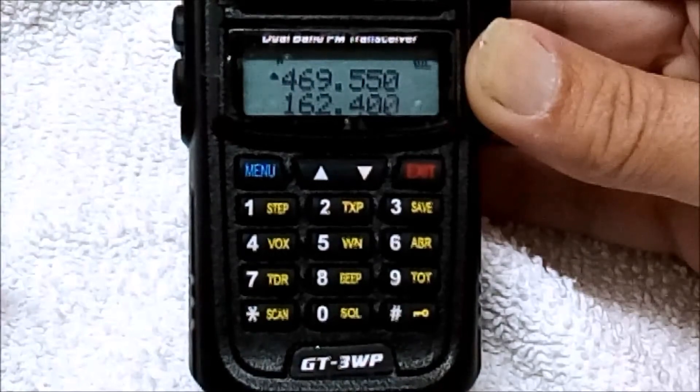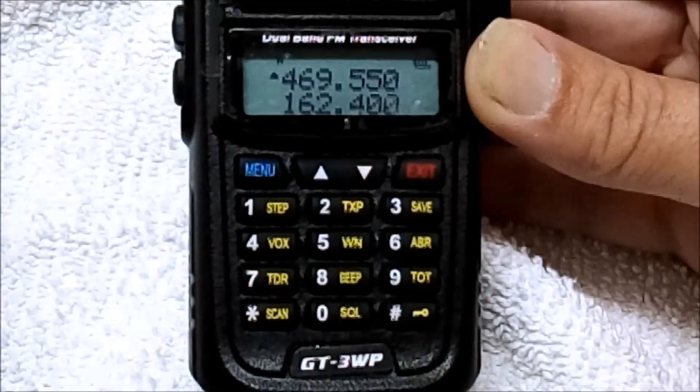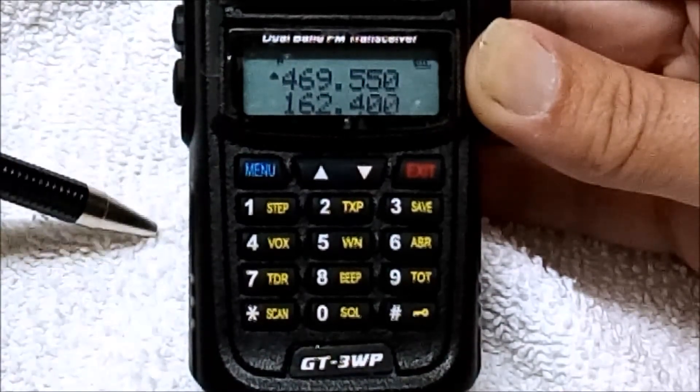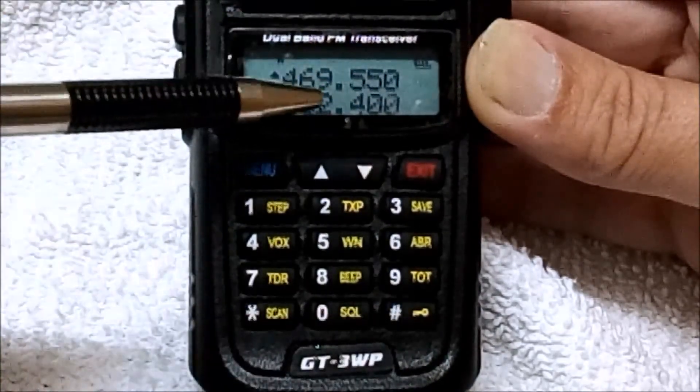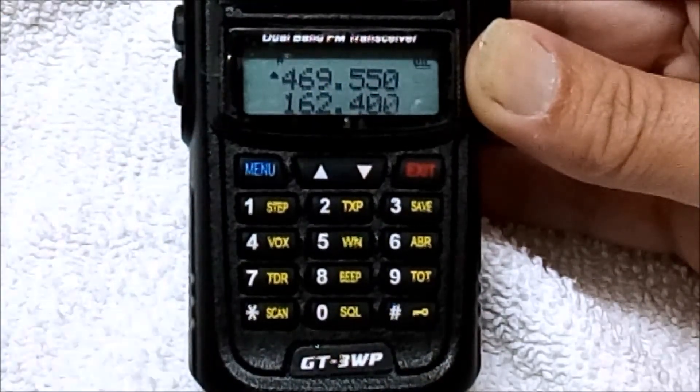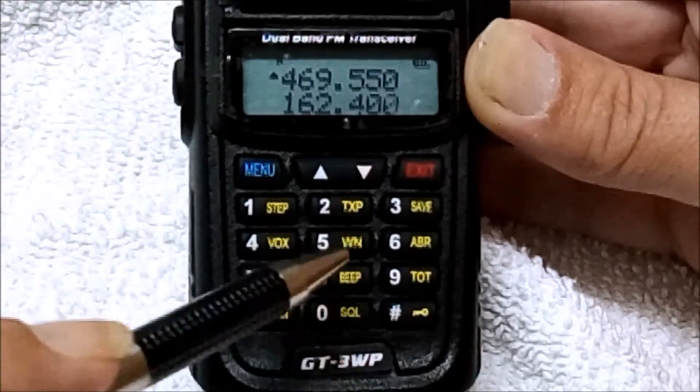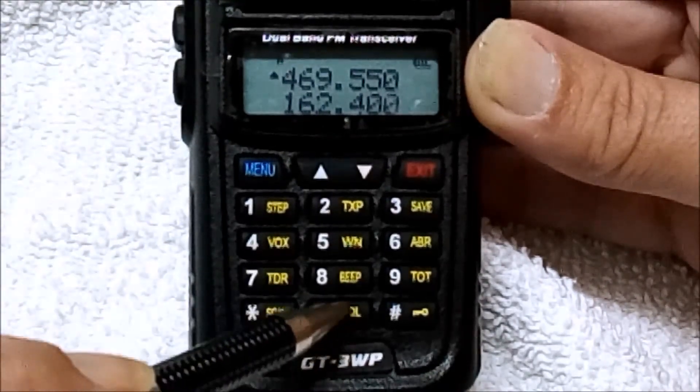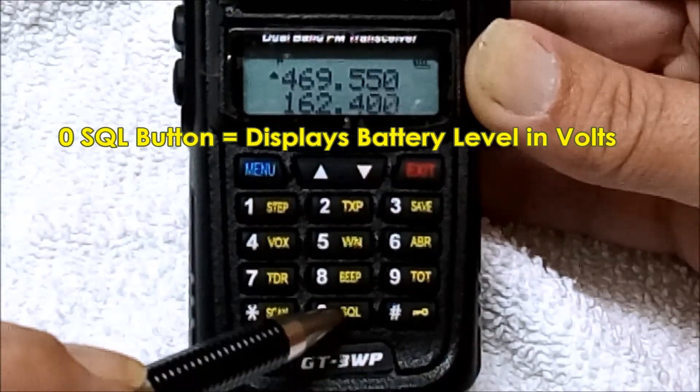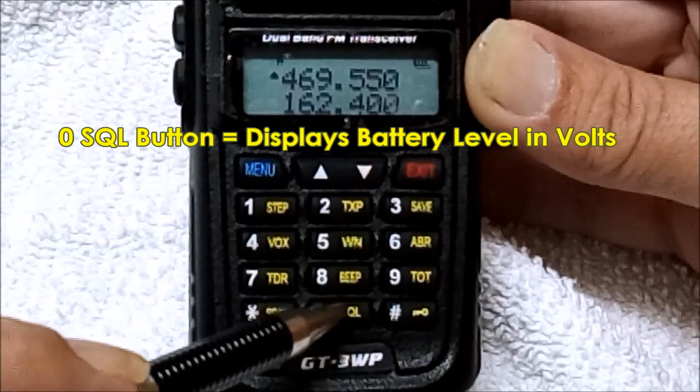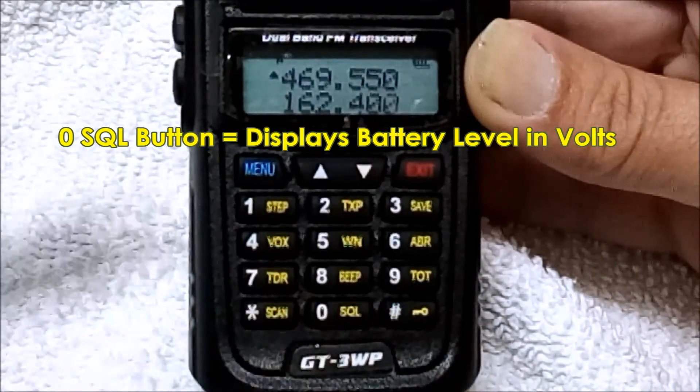Okay, today I'm going to show you something about the newer Baofeng radios. We've got a GT3WP. With the radio on, you can see we've got the frequency pulled up. Today we're going to be talking about the zero SQL button. When you push and hold the zero SQL button when the radio is on, it gives you the level of battery or the power left in the battery.